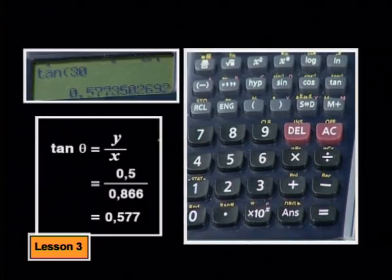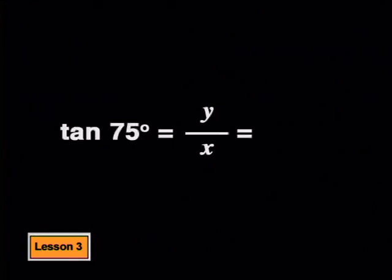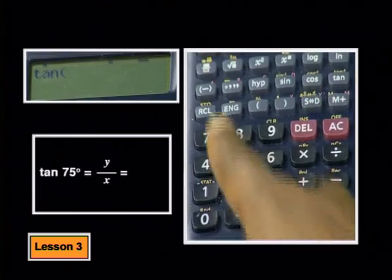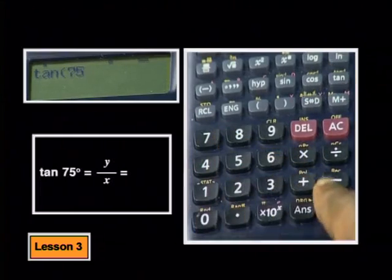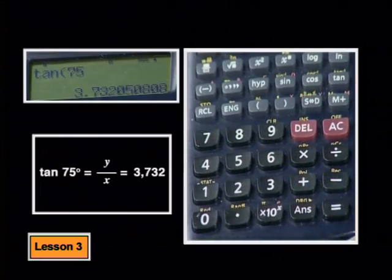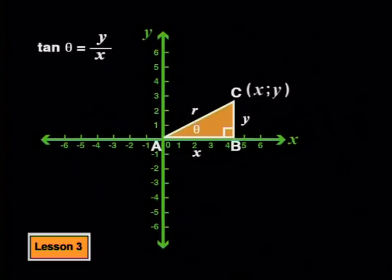If we increase theta to, say, 75 degrees, then tan of theta will be 3.732. This time I just use the calculator to get the value of tan 75 degrees. It is important to understand that the function is not using this distance x and this distance y as its two variables.